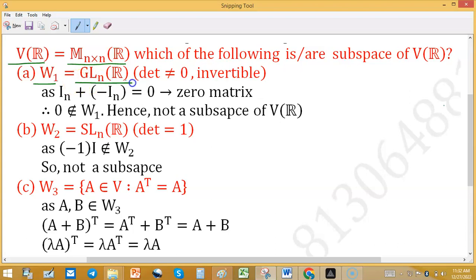This is GL_n(R), contains all those square matrices with determinant not equal to zero, which means invertible. And we know that the zero matrix has determinant as zero, so the zero matrix will not be contained in this, so W1 is not a subspace.